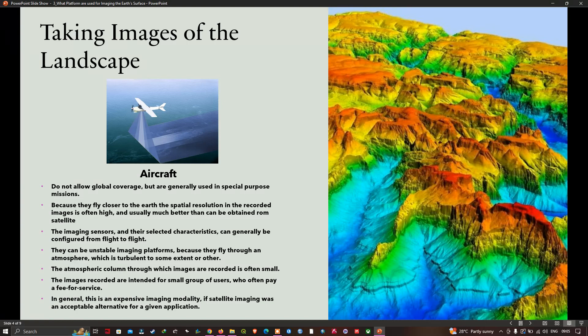The atmosphere is turbulent to some extent. The atmospheric column through which the images are recorded is often small. The images recorded are intended for a small group of users who often pay a fee for the services. In general this is an expensive imaging modality if satellite imaging was an acceptable alternative for a given application. However, since the atmospheric column is generally small, the distortion in brightness and contrast tend not to be as significant as with satellites.